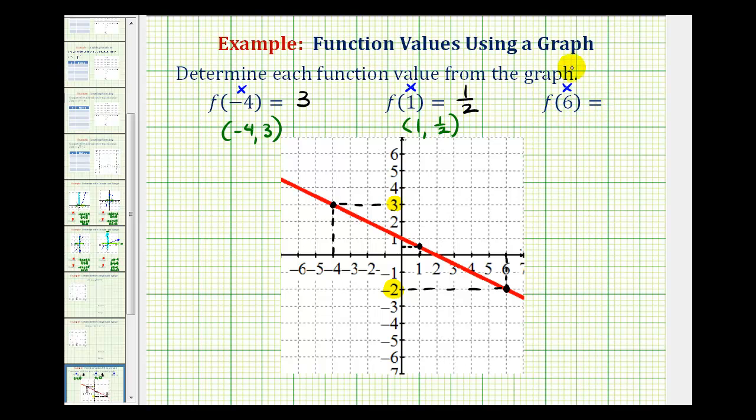So f of six equals negative two, which means the function contains the point with an x-coordinate of six and a y-coordinate of negative two.